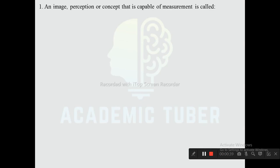Question one: An image, perception, or concept that is capable of measurement is called — options are scale, type, variable, hypothesis. The correct answer is variable. A variable is something that can be measured or varied in a scientific study.